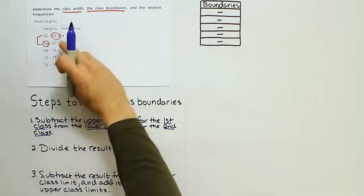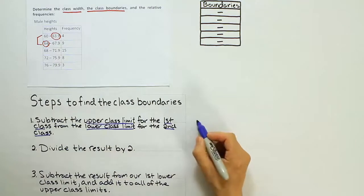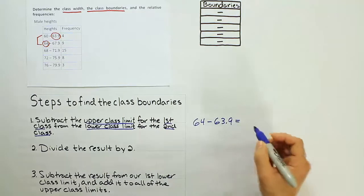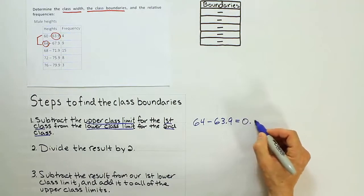All right, so we're going to subtract those two numbers. So that'll be 64 minus 63.9. And when we do that, we get a difference of 0.10.